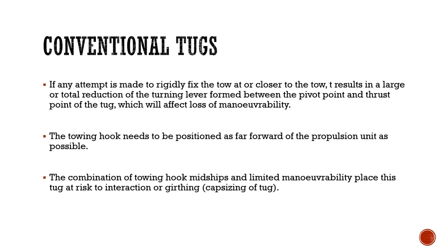The towing point will usually be as far forward and as near amidships as possible. The pivot point reduces from the propeller, and hence the thrust also reduces. If any attempt is made to rigidly fix the tow on conventional tugs or closer to the tow, it results in a large or total reduction of the turning lever formed between the pivot point and the thrust point of the tug, affecting maneuverability.